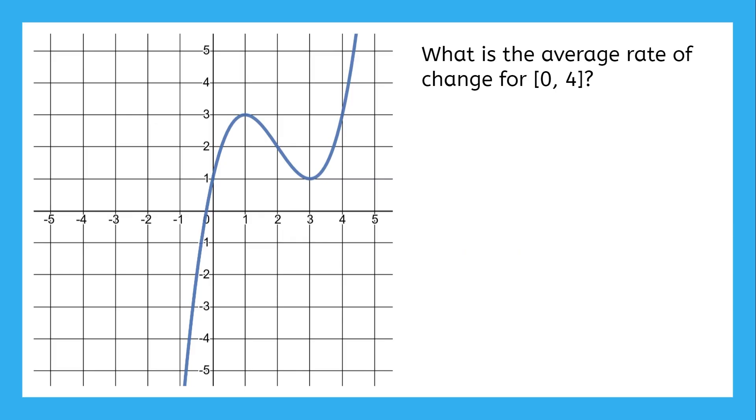What is the average rate of change on the interval from zero to four on this function? To figure that out, we find the point where the input is zero and the point where the input is four, then find the slope between those two points. Rise two, run four. So the average rate of change is two over four, or one half.